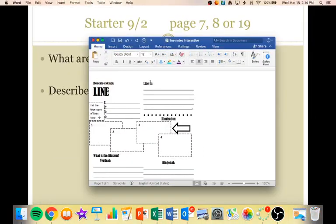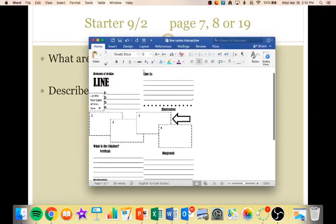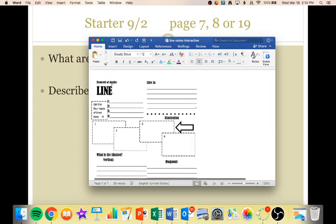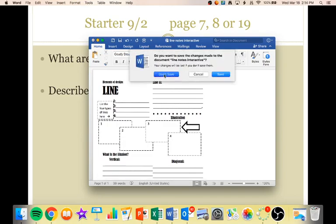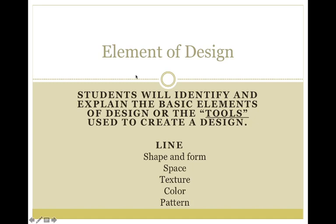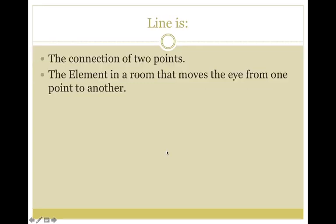Today we are going to be talking about line. This is our first element of design, so you're going to need these notes. It is in your unit 2 module, so make sure that you either print these off or pick them up from the school. An element of design is also known as the tools of design, and line is just one of them. Line is the connection of two different points — it's the element in a room that moves your eye from one place to another.